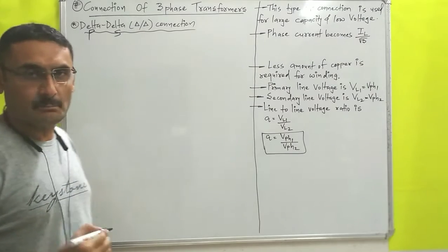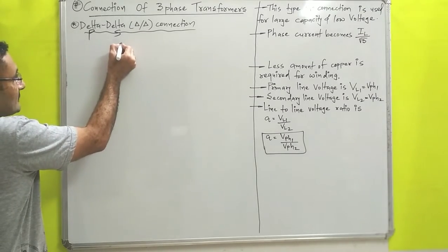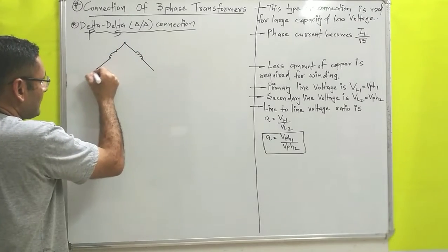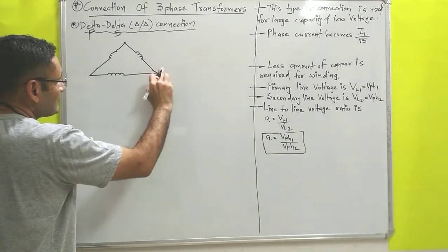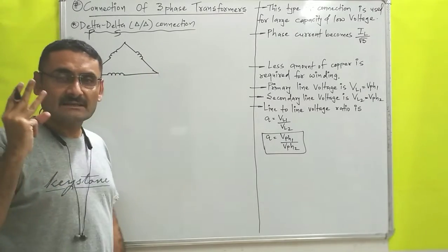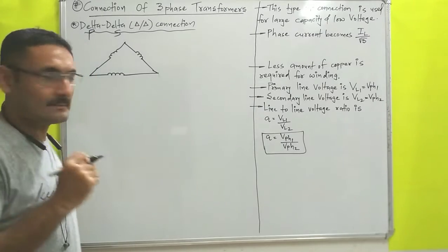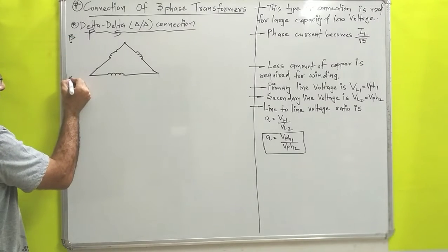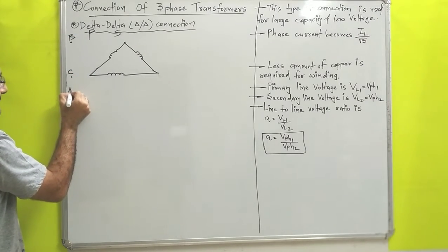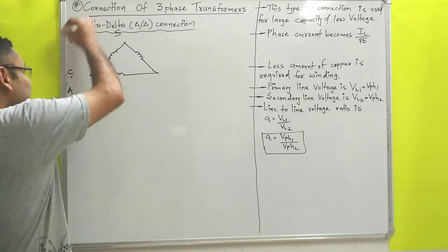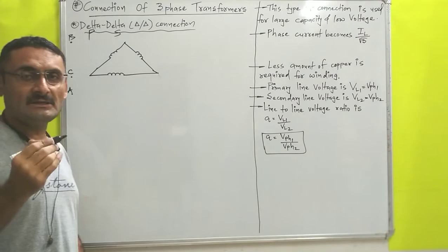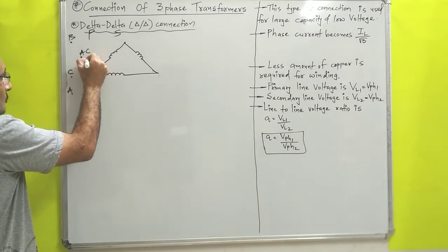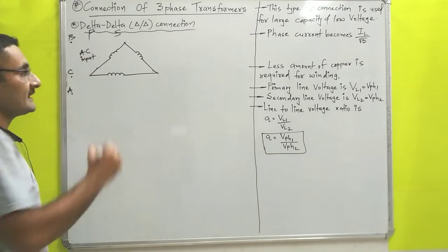We will understand this with the help of symbols first. I will draw a delta connection — that is our three-phase delta connection. After that we will consider three terminals for the three-phase AC supply: terminal B, terminal C, and terminal A. With the help of these three terminals we will supply the AC input to this primary winding which is delta connected.